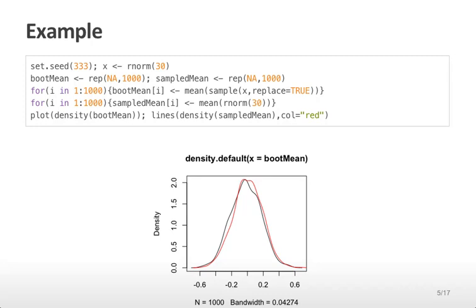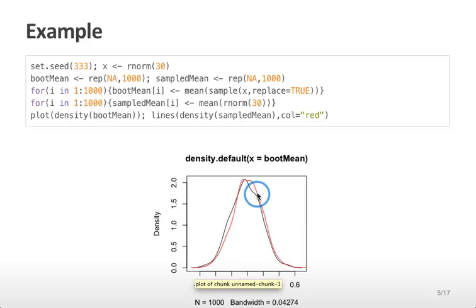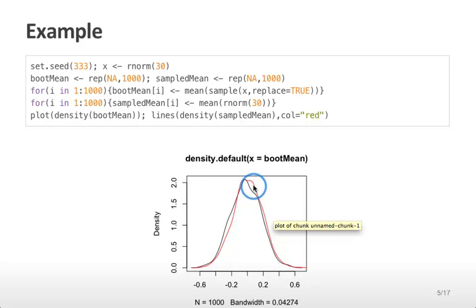Here's an example of how that might work. I'm going to set the seed and generate 30 normal random variables, then look at a distribution in two different ways. First, I'll go through a thousand times and take a sample with replacement from the observed 30 values. Each time I can only generate samples from the 30 values I originally generated, then take their mean and save that to a vector boot mean. The other way is to generate a brand new set of 30 normal random variables in each of the 1,000 iterations and take its mean. If I plot the distribution of the means from resampling my original 30 values in black, and plot in red the values from generating 30 new random variables every time, you can see these two distributions are remarkably similar to each other.